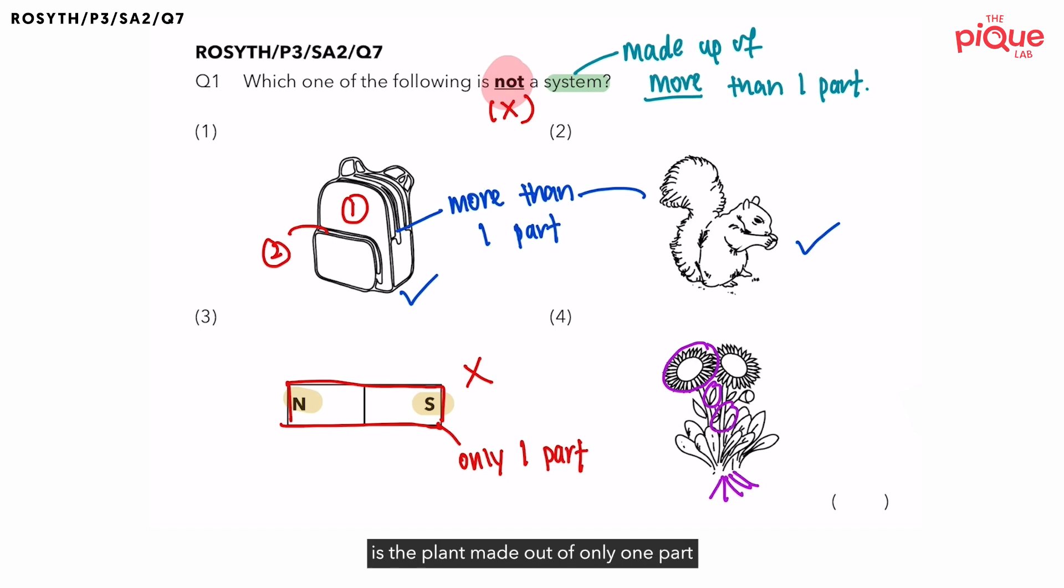So as you can see over here, is the plant made up of only one part or more than one part? The plant is made up of more than one part. So can you consider plant as a system? Yes, definitely. Since plant is considered as a system, I will give the plant a tick.